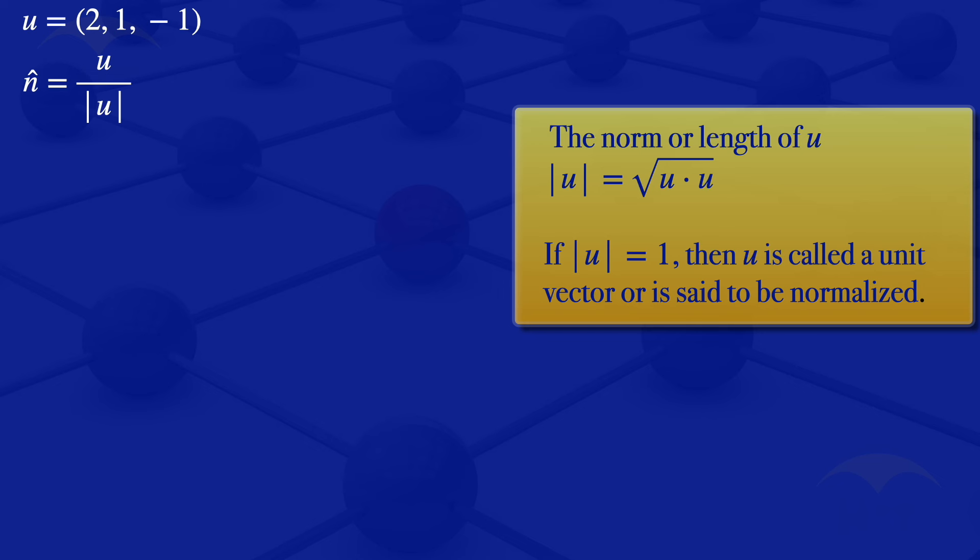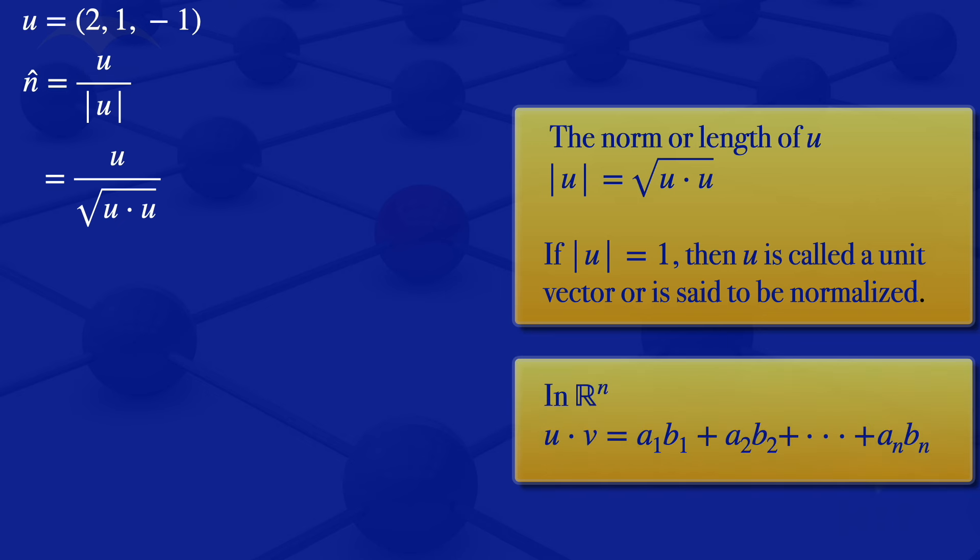The norm of u is the square root of the inner product of u and u. Earlier we said that the inner product u · v equals a₁b₁ + a₂b₂ + ... + aₙbₙ, multiplying the corresponding elements and adding them. In this case, we have u · u, so we're looking at 2 times 2 + 1 times 1 + (-1) times (-1).